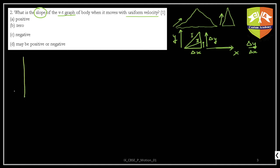Let's say this is a v-t graph. Since it is called a v-t graph, v will be on the y-axis measured in meters per second, and t in seconds will be on the x-axis. Now, how do I measure the slope?